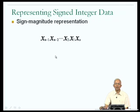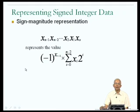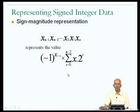The question is: what signed integer would a given sequence x_{n-1} through x_0 represent? The answer is that x_{n-1}, x_{n-2}, et cetera up to x_0 represents the value (-1)^{x_{n-1}} multiplied by the summation from i=0 to n-2 of x_i multiplied by 2^i.